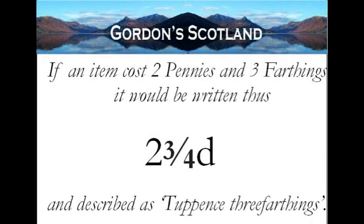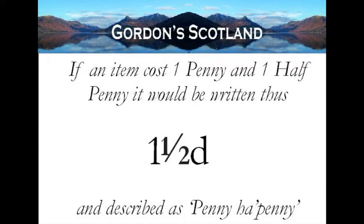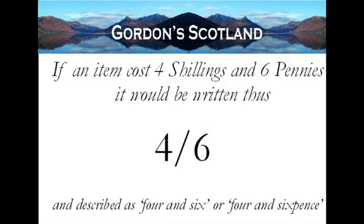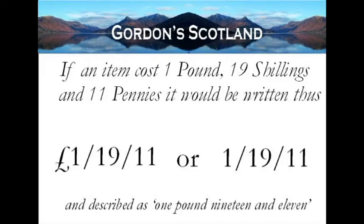A lot of words were abbreviated. If an item costs two pennies and three farthings, it would be described verbally as 'tuppence three farthings.' If an item costs one penny and one halfpenny, it would be described as 'a penny ha'penny.' If an item costs nine pennies, it would be described as 'ninepence.' If an item costs four shillings and six pennies, it would be described as 'four and six.' And if your item had pounds, shillings and pence — for example one pound nineteen and eleven, just below two pounds — it would be described as 'one pound nineteen and eleven.'